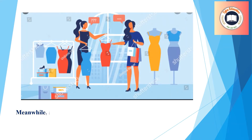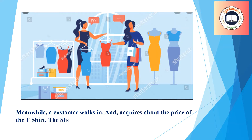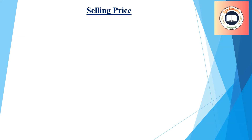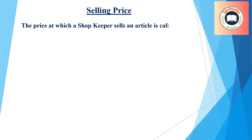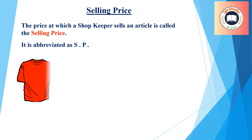Meanwhile, a customer walks in and asks about the price of the t-shirt. The shopkeeper tells that he is selling it for Rs. 450. Selling price: The price at which a shopkeeper sells an article is called the selling price. It is abbreviated as SP. The cost price of the t-shirt is Rs. 400 and the selling price of the same red t-shirt is Rs. 450.